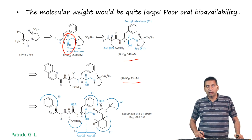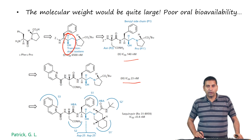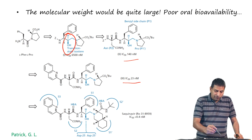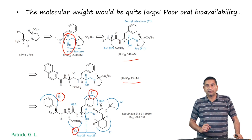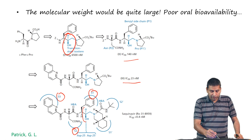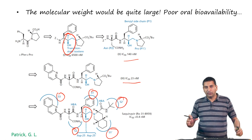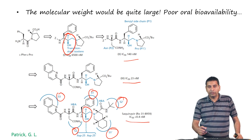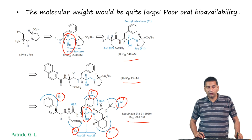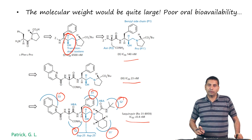The initial transition state isostere had an IC50 of about 6500 nanomolar. Subsequently this was further optimized to reduce the IC50 to 140 nanomolar, and finally further modifications led to an improved IC50 of 23 nanomolar. Based on the interaction of the S3, S1, S2 subsites and keeping the transition state in mind, as well as S2' and S1', a molecule called coenavir was identified with an IC50 of less than 0.4 nanomolar — fantastic for use as an HIV protease inhibitor.